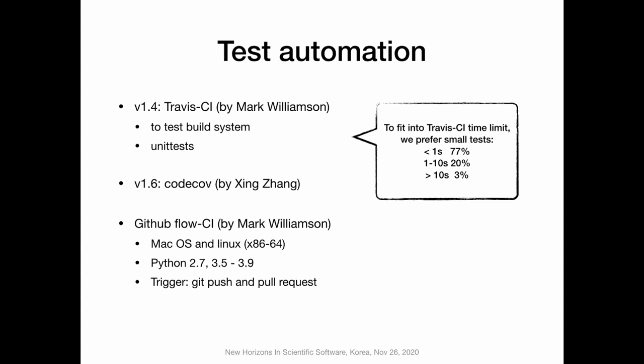This happened this year, still conducted by Mark Williamson. Right now we run tests for Mac OS and Linux systems, covering Python 2.7 and most Python 3 distributions. They are triggered by git push and git pull requests. I would say that covers most running scenarios in our daily use.